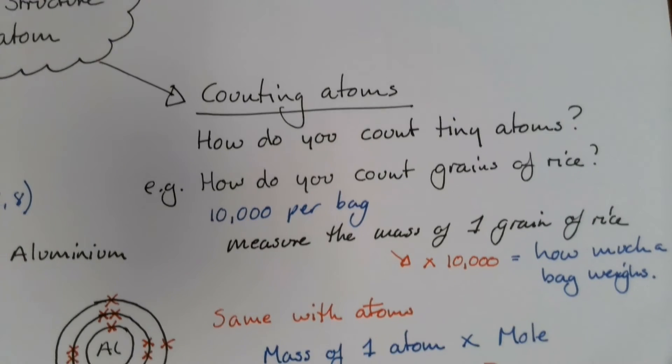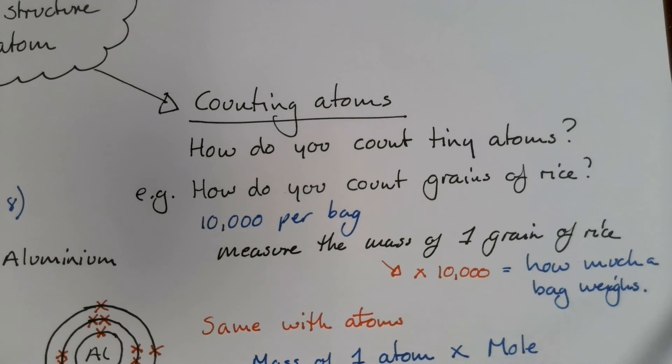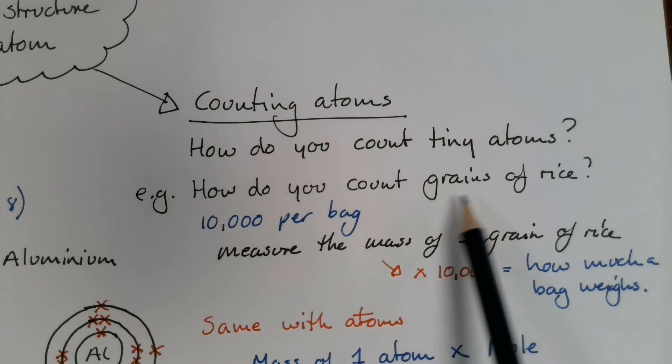Final thing we're going to look at is how we actually count atoms. Now, atoms are too tiny to count by themselves. We can't pick them up individually and count them in hundreds, thousands, or millions even. They're still too small to do that. So let's look at a more realistic version of how you might count something really small. How do you count grains of rice?